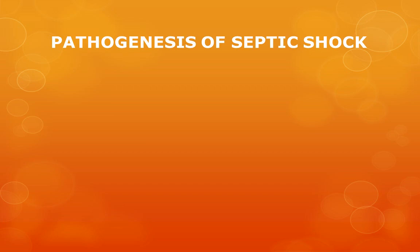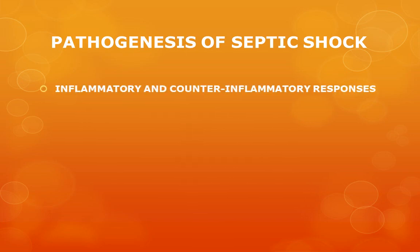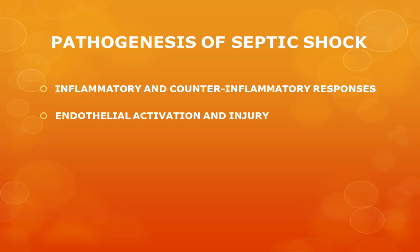Numerous cells of inflammation—macrophages, neutrophils, and dendritic cells—are all involved in the pathogenesis of septic shock. There are four or five mechanisms involved in its pathogenesis. At the top of the list is the inflammatory and counter-inflammatory response, also called systemic inflammatory response syndrome (SIRS).